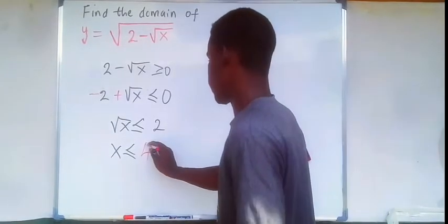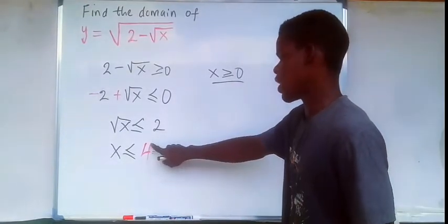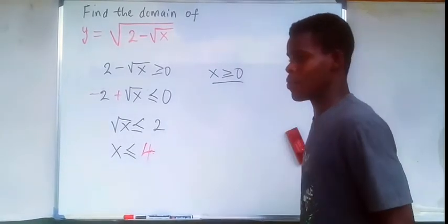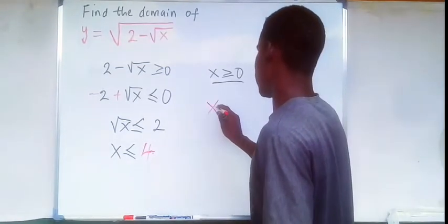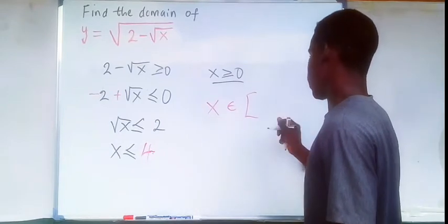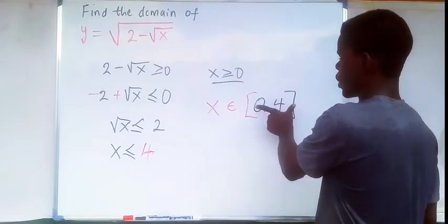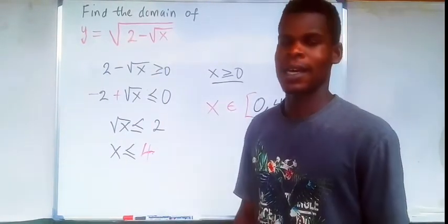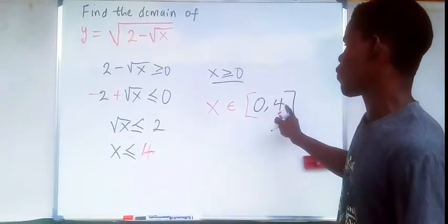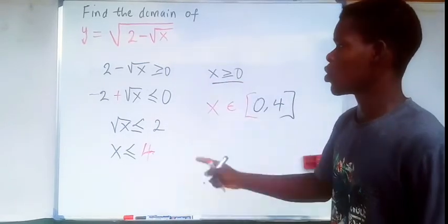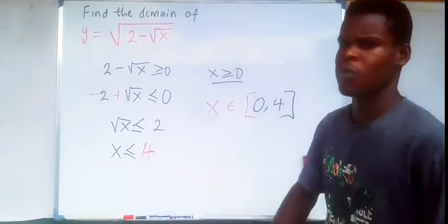So we have x ≥ 0 from one condition and x ≤ 4 from the other. That means x cannot be less than 0 and cannot be more than 4. The range of valid values of x is the closed interval [0, 4]. This is the domain of the function. You can plug in any value in this interval and the function will be defined, and any value outside it will make the function undefined.